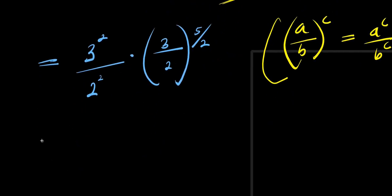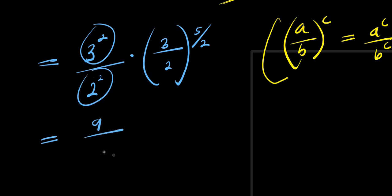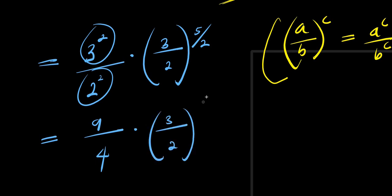So from here, we are going to have 3 to the power of 2, which is 9, divided by 2 to the power of 2, which is 4, times 3 divided by 2, raised to the power of 5 over 2.